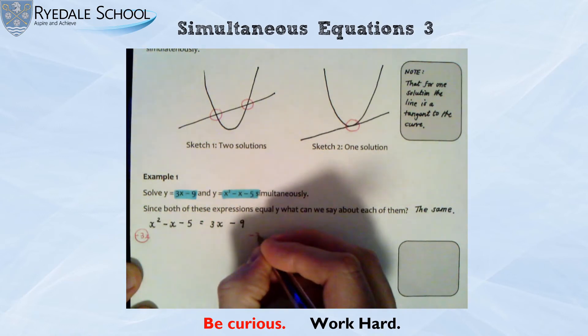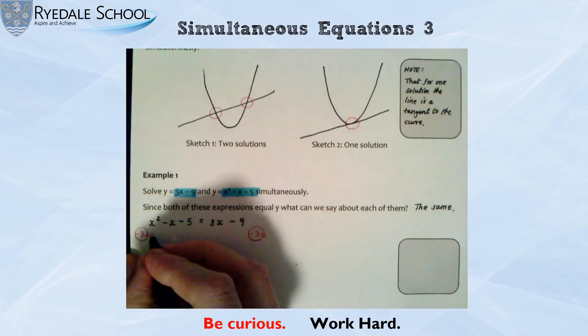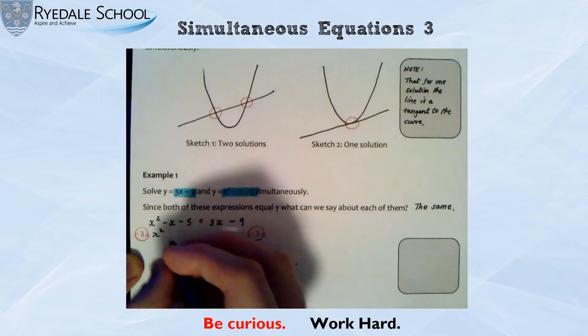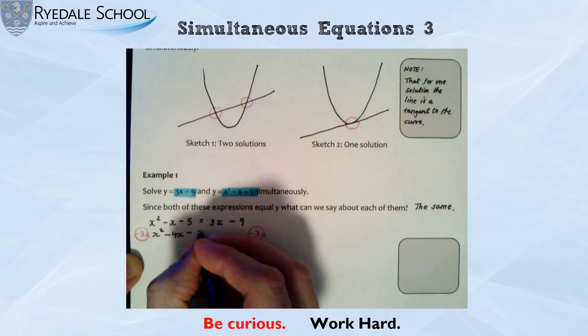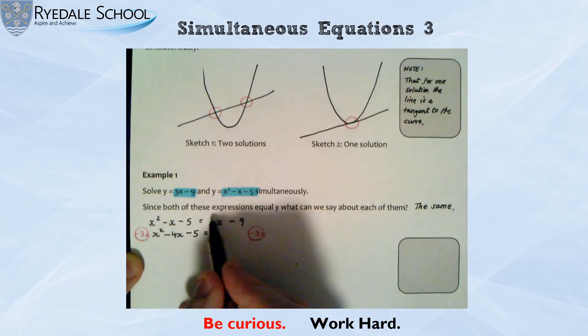But I'm going to take away three x's. So take off three x's from both sides. The x squared stay the same. I've got negative x, take off three x's. And that is negative 4x. And the negative 5 stays the same. I've subtracted three x's from here. So that's now gone. And I'm left with negative 9.